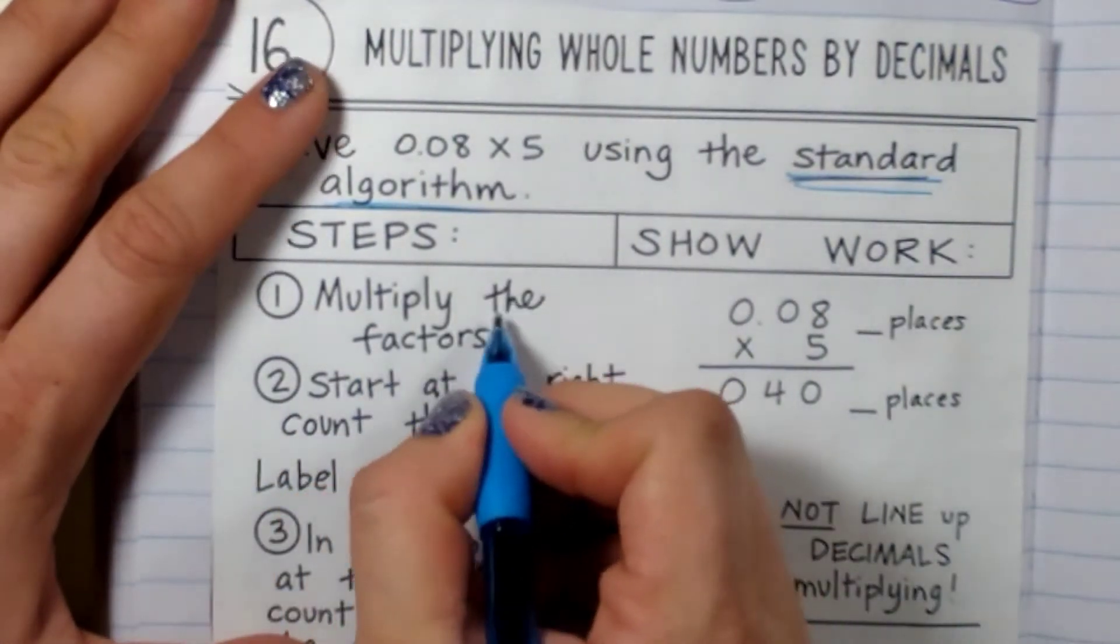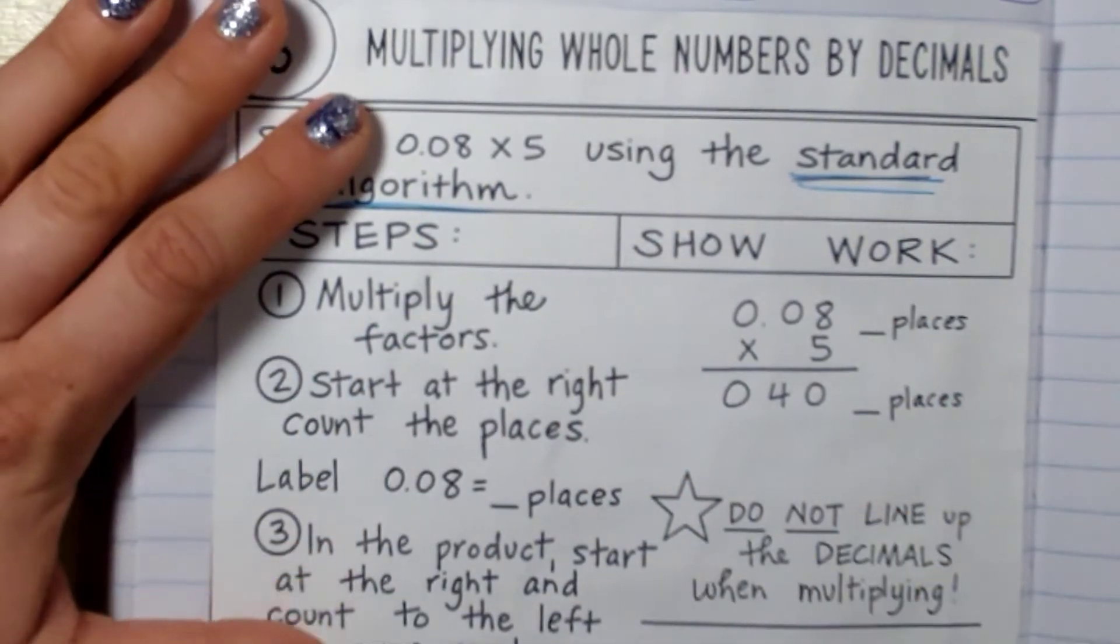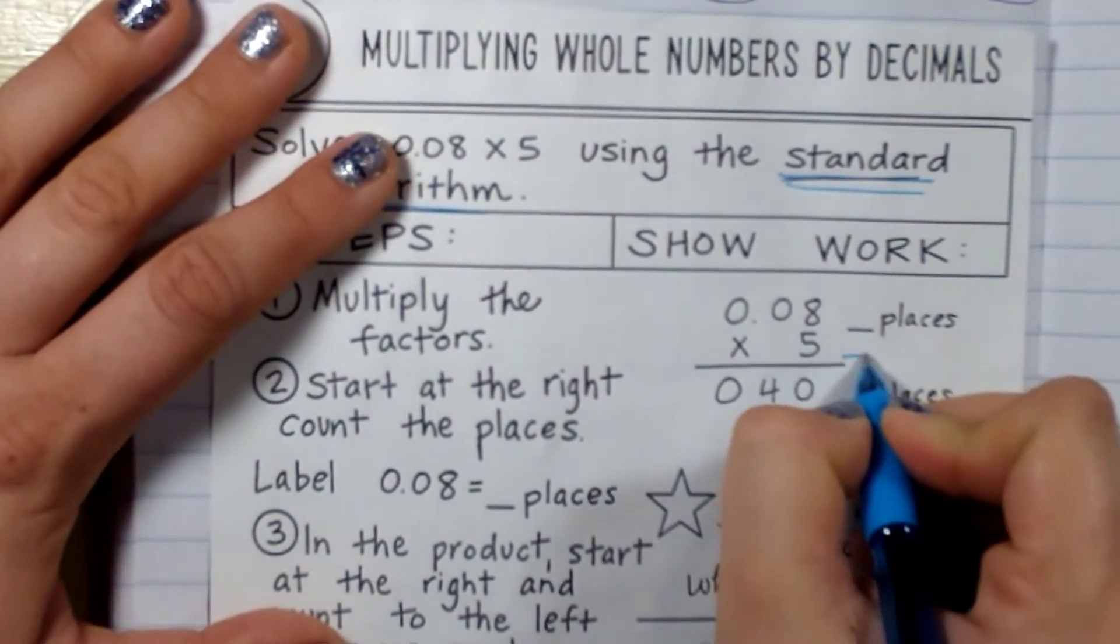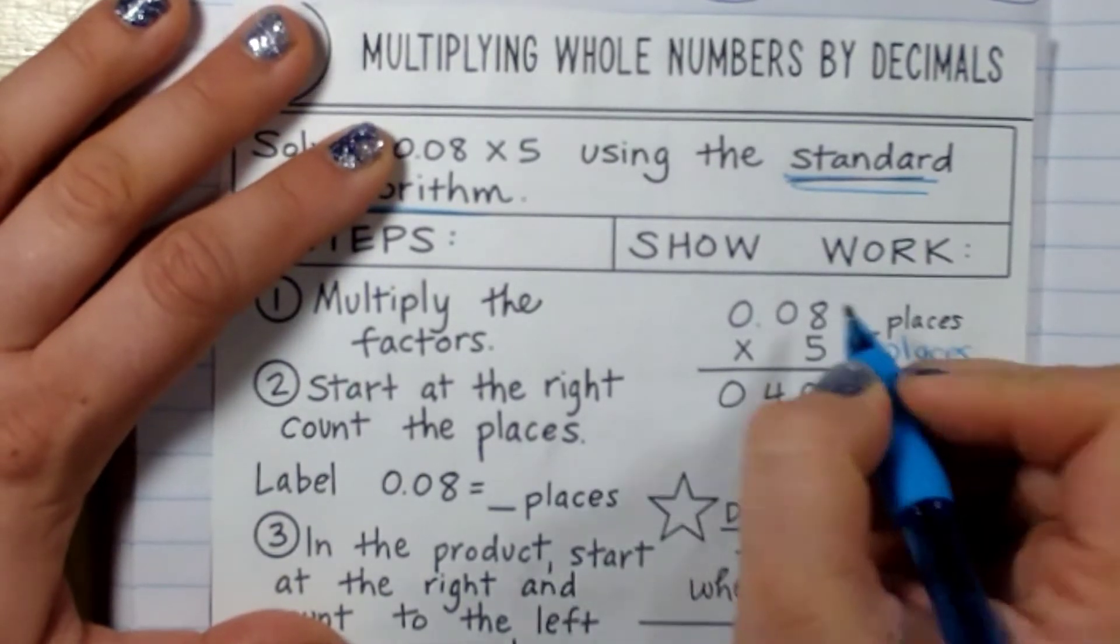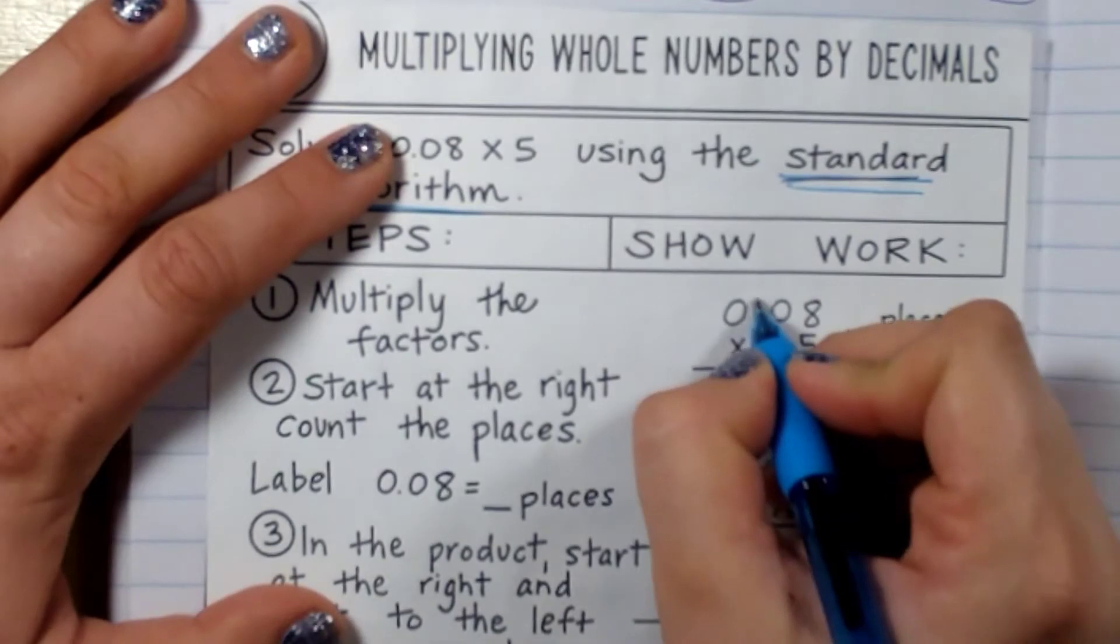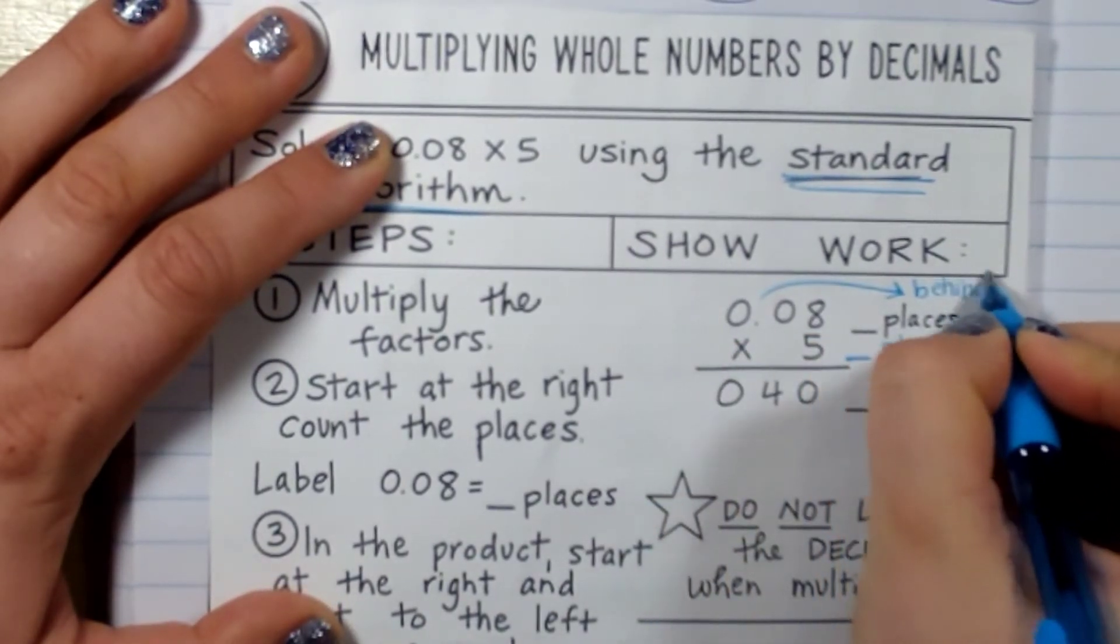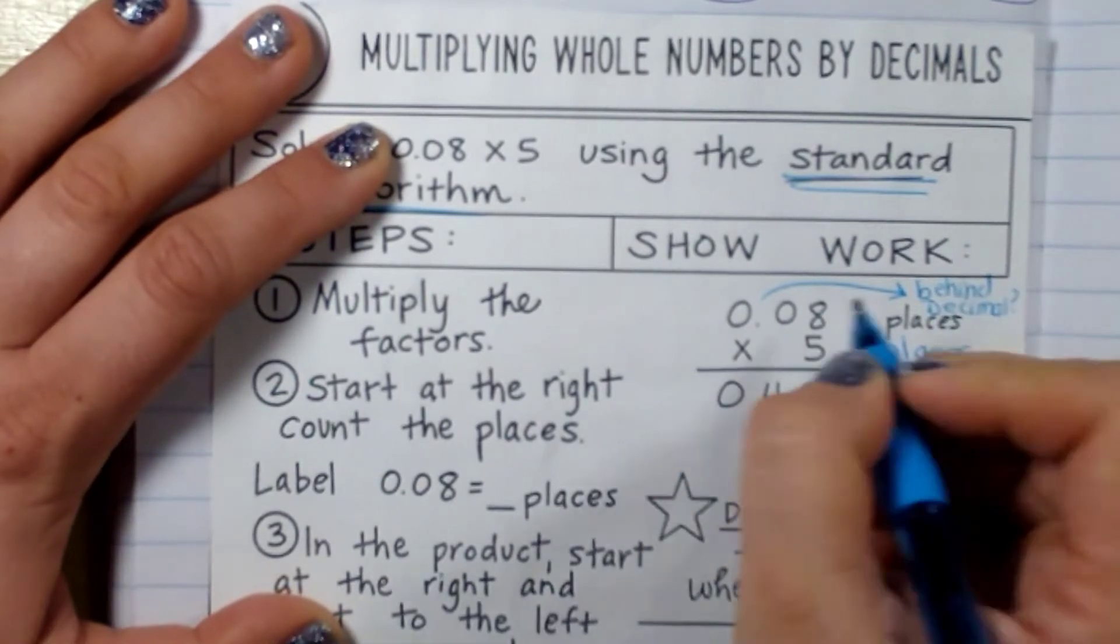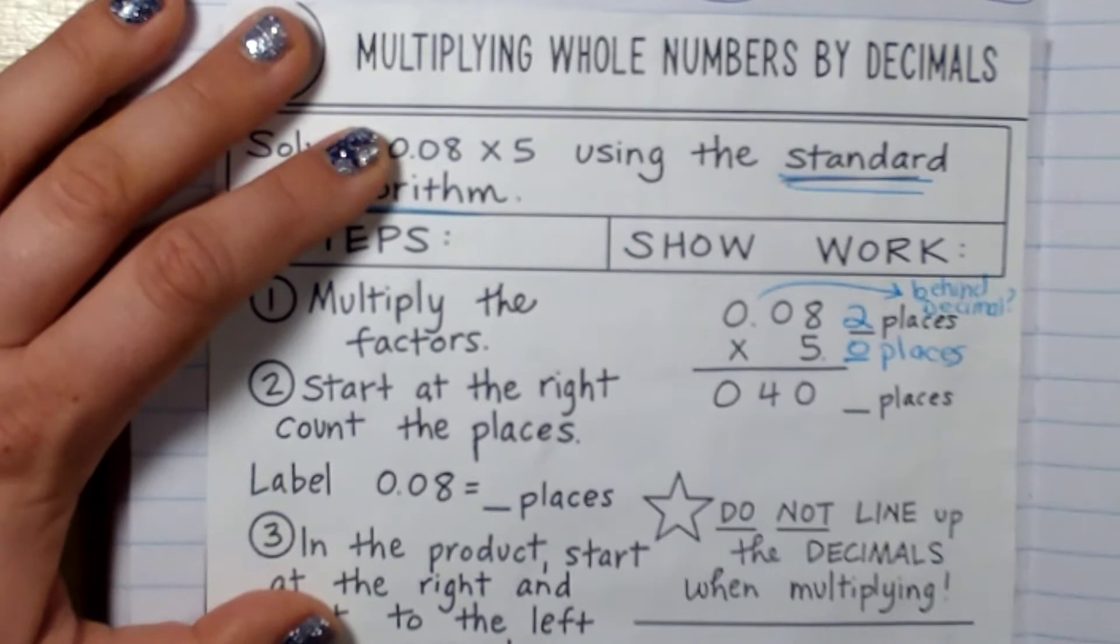So multiply the factors. These are the factors. We're going to pretend like there are no decimal points when we multiply. But for each of the factors, I want to say how many place values are behind, how many are behind the decimal. There are two places behind the decimal here. There are zero places behind the decimal here because the decimal is right here at the end.